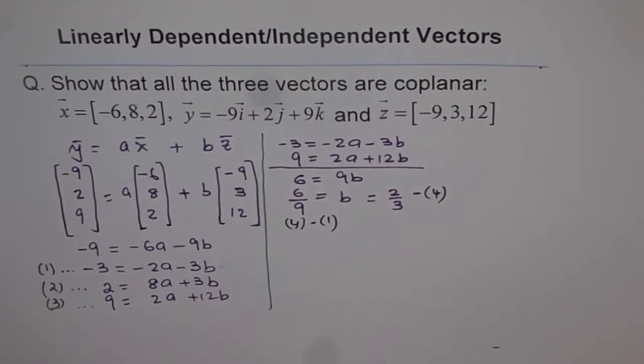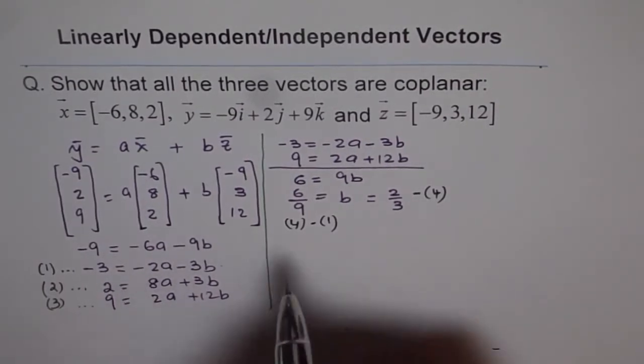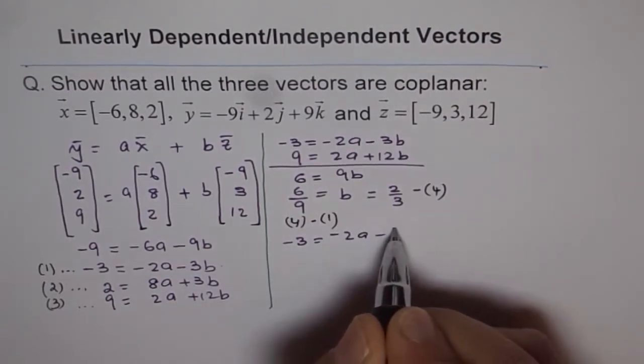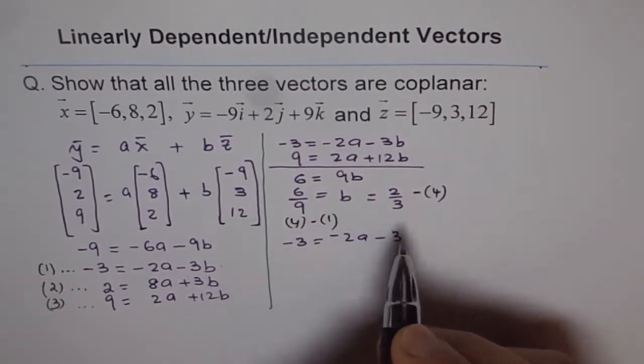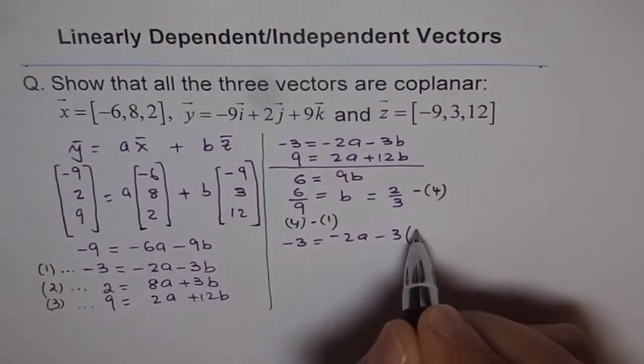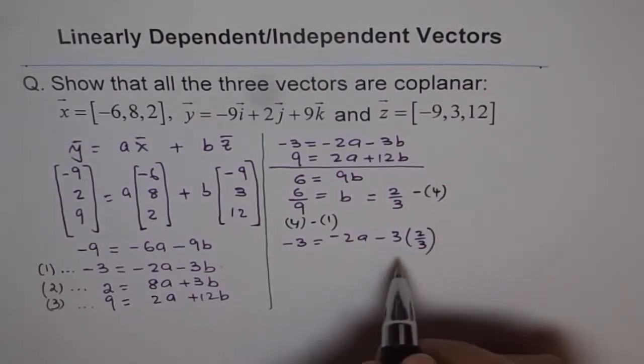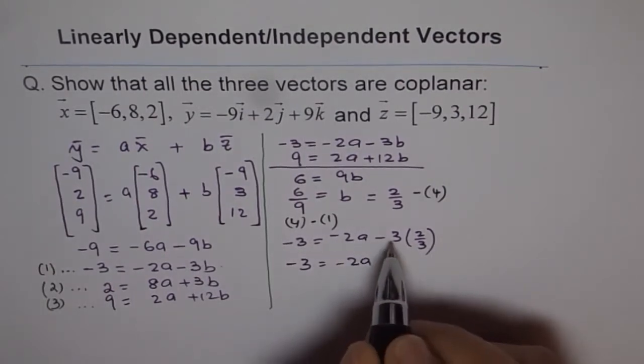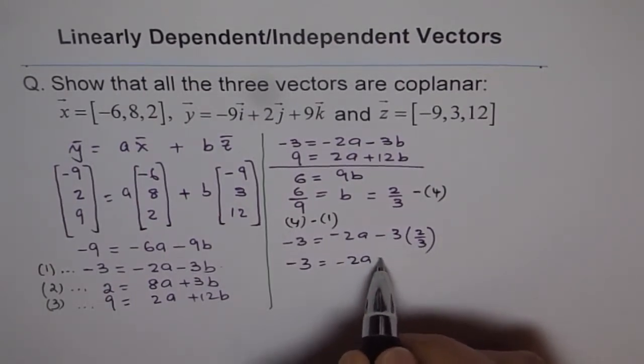So now equation 1 is minus 3 equals to minus 2 times a minus 3 times b value is 2 over 3. So let me write down 2 over 3 here. Now that gives us minus 3 equals to minus 2a, and 3 divided by 3 is 1, minus 2.